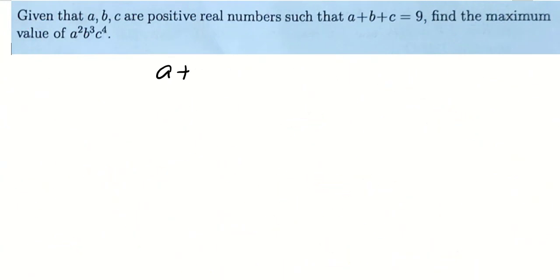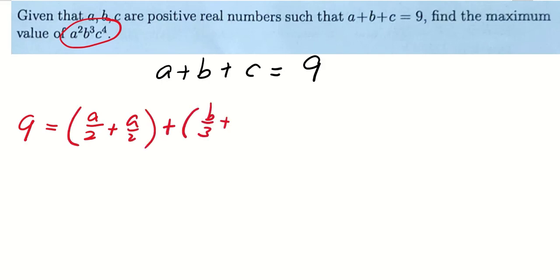Now recall that the sum of A, B, and C equals to 9. We can rewrite 9 as the sum of A over 2 plus A over 2 plus B over 3 plus B over 3 plus B over 3, and finally plus 4 copies of C over 4.